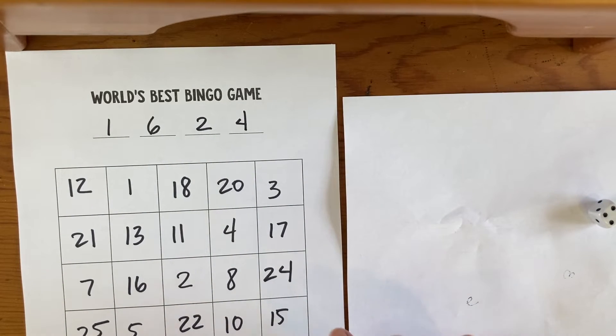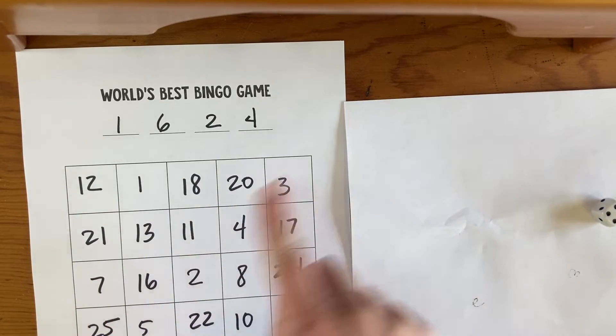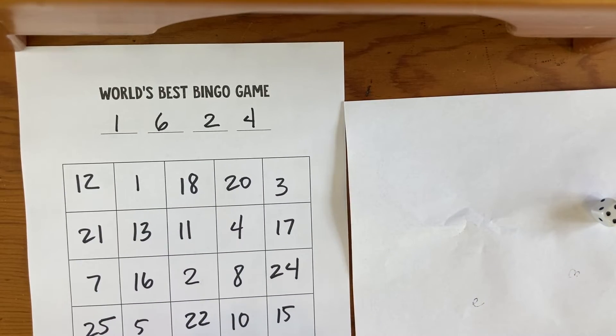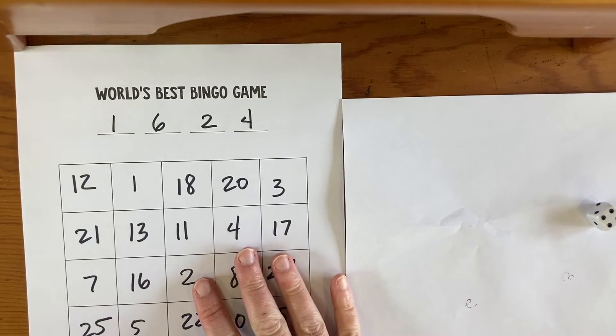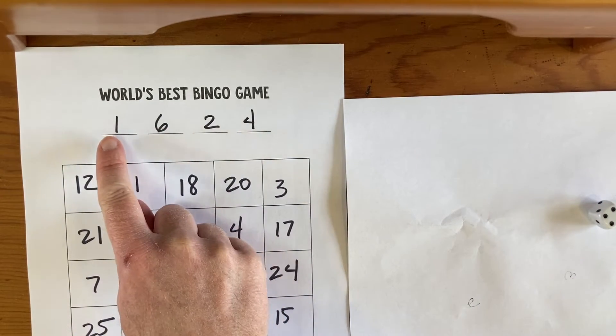The nice thing about it is everybody plays together to try and get five in a row. You can get five in a row down, across, or diagonally. The way you do that is you're going to use the numbers that you have at the top, in this case 1, 6, 2, and 4, with any kind of math to make one of these numbers.